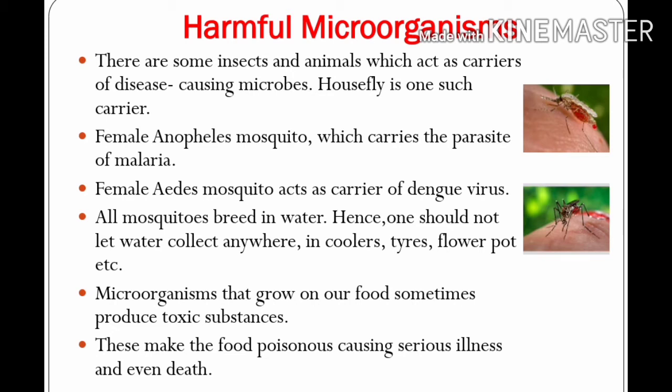The female Anopheles mosquito carries the parasite of malaria. Mosquitoes are parasites because they are dependent on the host for nutrients. Whenever they bite, they carry the malaria parasite — plasmodium — which enters our body and causes malaria. The female Aedes mosquito acts as a carrier of the dengue virus. All mosquitoes breed in water, hence one should not let water collect anywhere in coolers, tires, flower pots, etc.